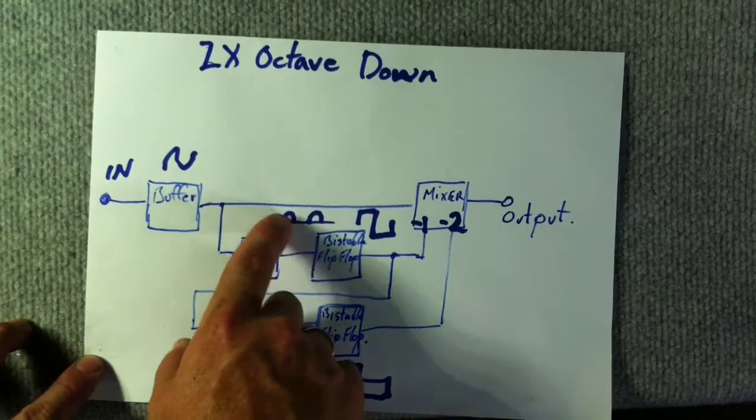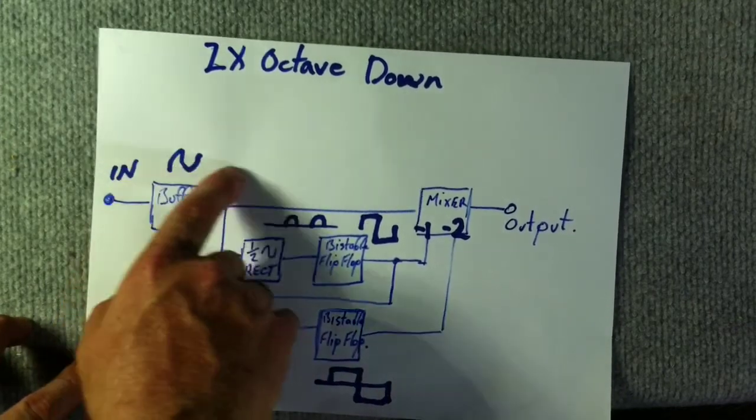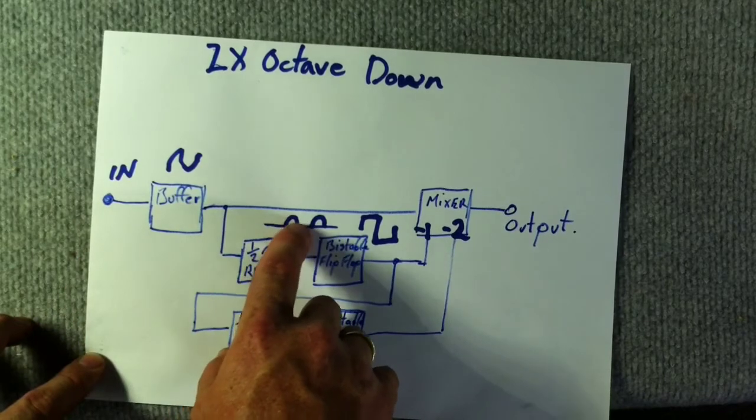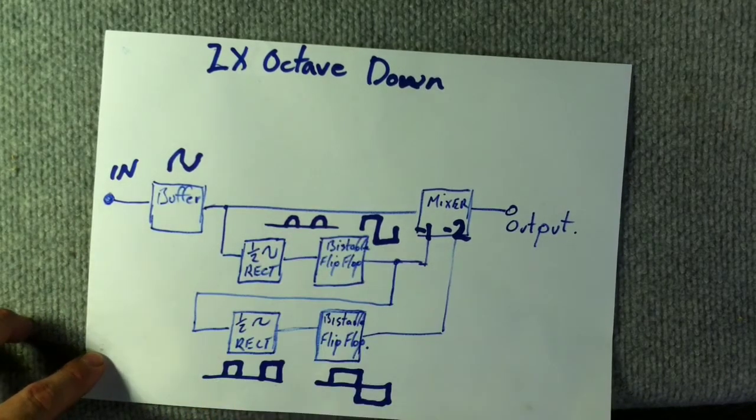So once it's half-wave rectified it'll look like this, whereas when we fed it in it looks like a sine wave. It'll now look like a hump with a space and then another hump and a space.